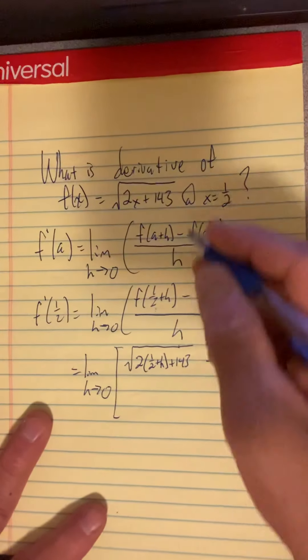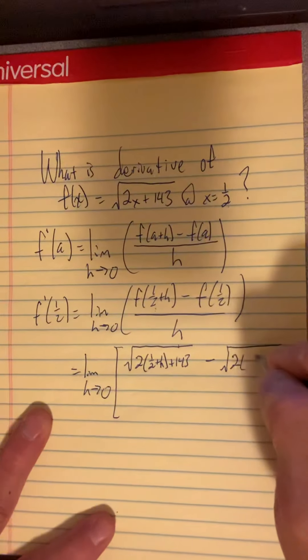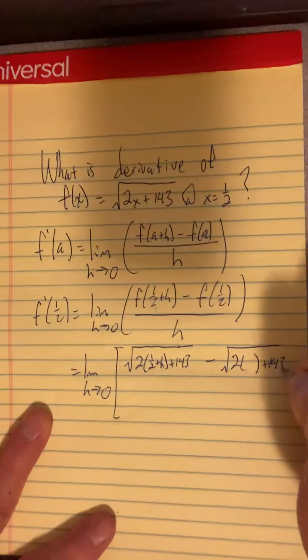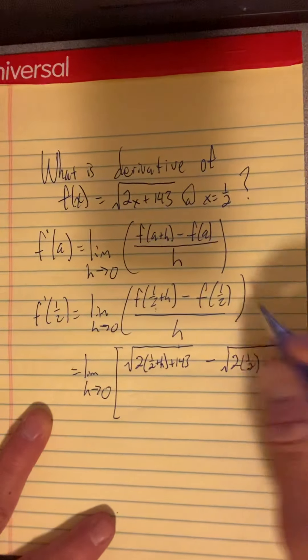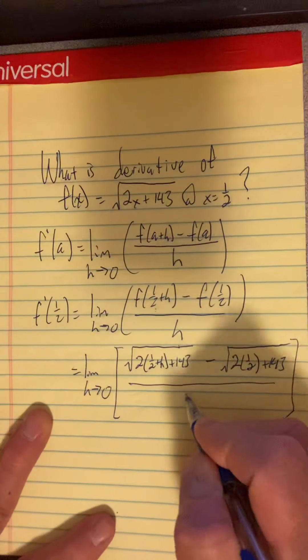And then minus the function again. So I got to write the function again. Well, this function is the square root of two times the input plus 143, but this time the input is simply a half. So I put a half. And it's all over h.